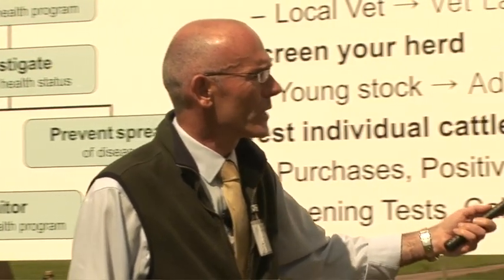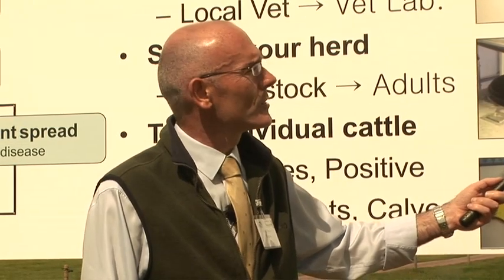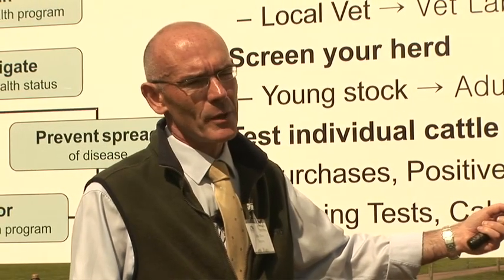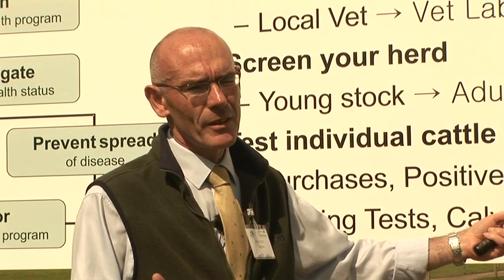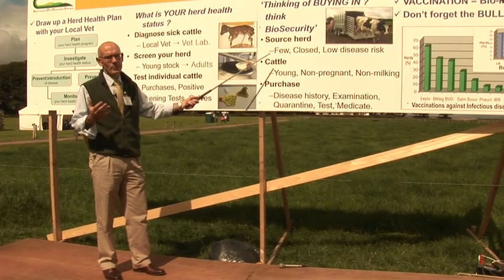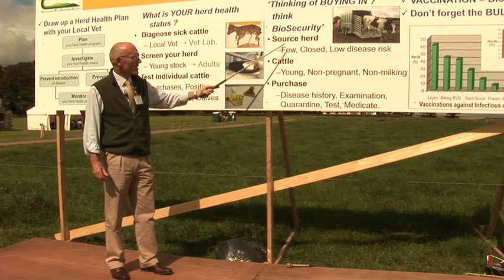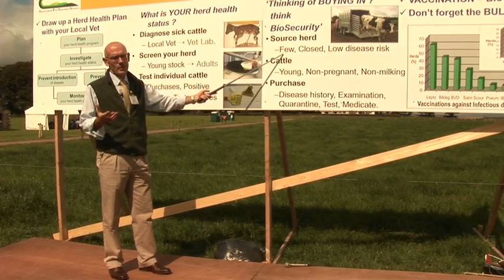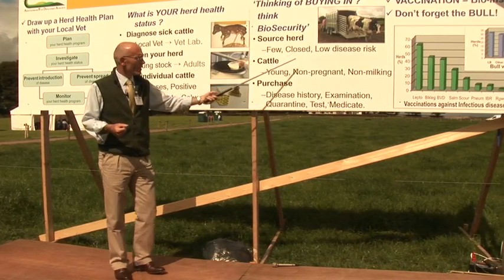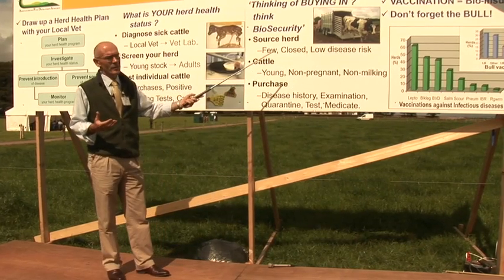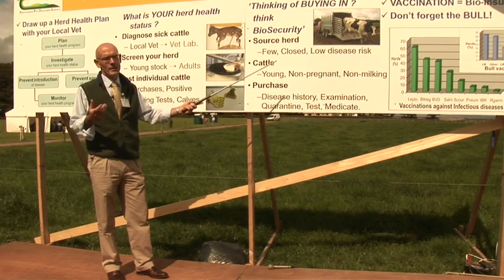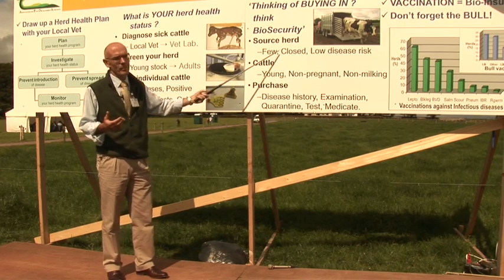Having determined your herd health status, you then want to protect it, and the way to do that is not to buy in disease. We know from surveys that approximately 10 to 20 percent of farms only are closed. The remainder of dairy farms are open — that means they buy in. So how can you reduce your risk if you are going to buy in during an expansion era? The first thing is buy from as few source herds as possible. Buy from source herds that are themselves closed. Buy from source herds that have a low disease risk — these are typically small herds, herds that don't have imported cattle, herds that have not been depopulated for disease previously. These are all factors that reduce your risk of buying in disease.